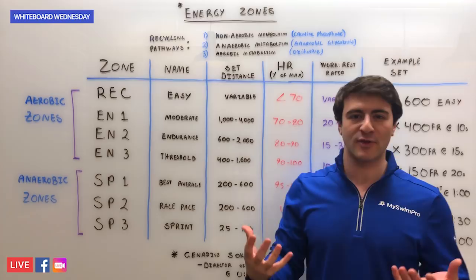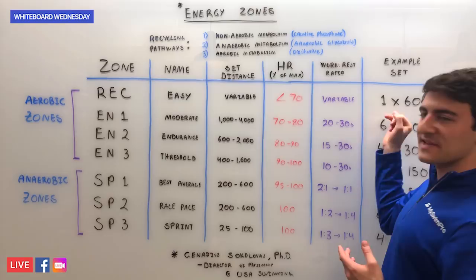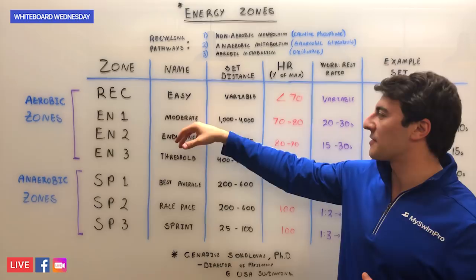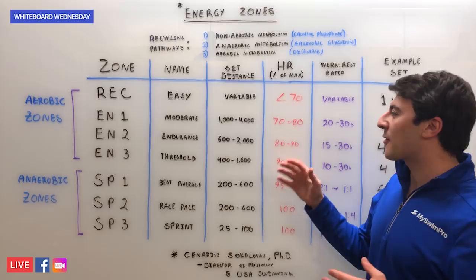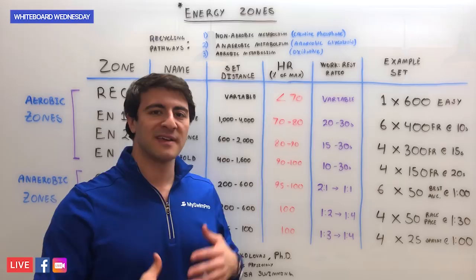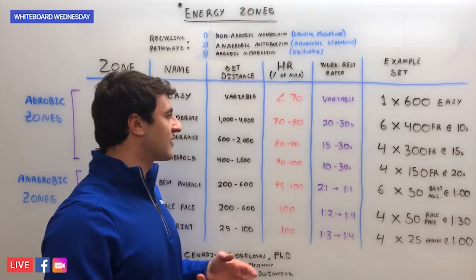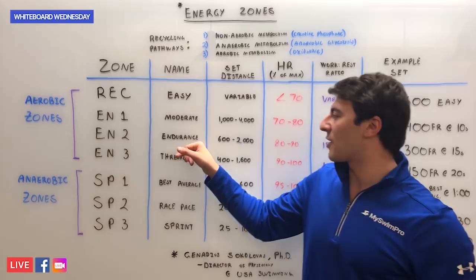Oftentimes recovery and EN1 will be your warmup or cool down, with heart rate as a percentage of max less than 70%. The work-to-rest ratio isn't really relevant since you're normally doing one of these as a single repetition — so you might do a 600 easy warmup. EN1 is called Moderate in the MySwimPro application. These are longer sets in duration, anywhere from 1000 to 4000 meters, heart rate 70 to 80%, with typically 20 to 30 seconds rest. An example set might be six 400s on about 10 to 15 seconds rest.